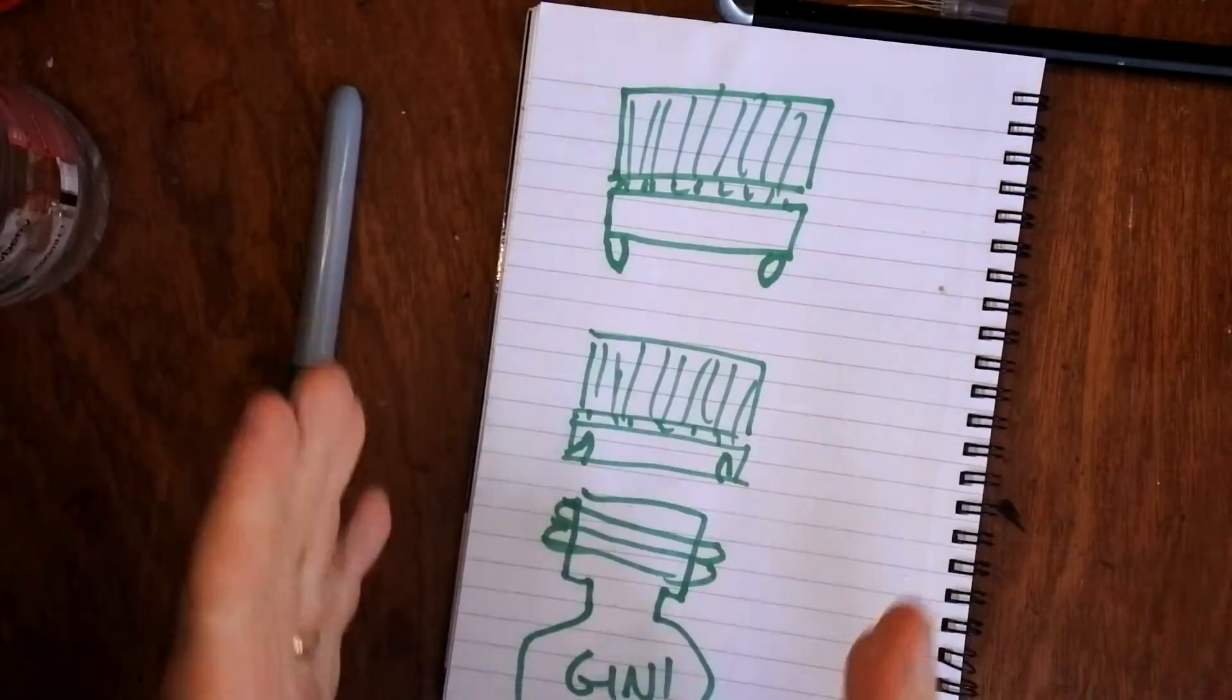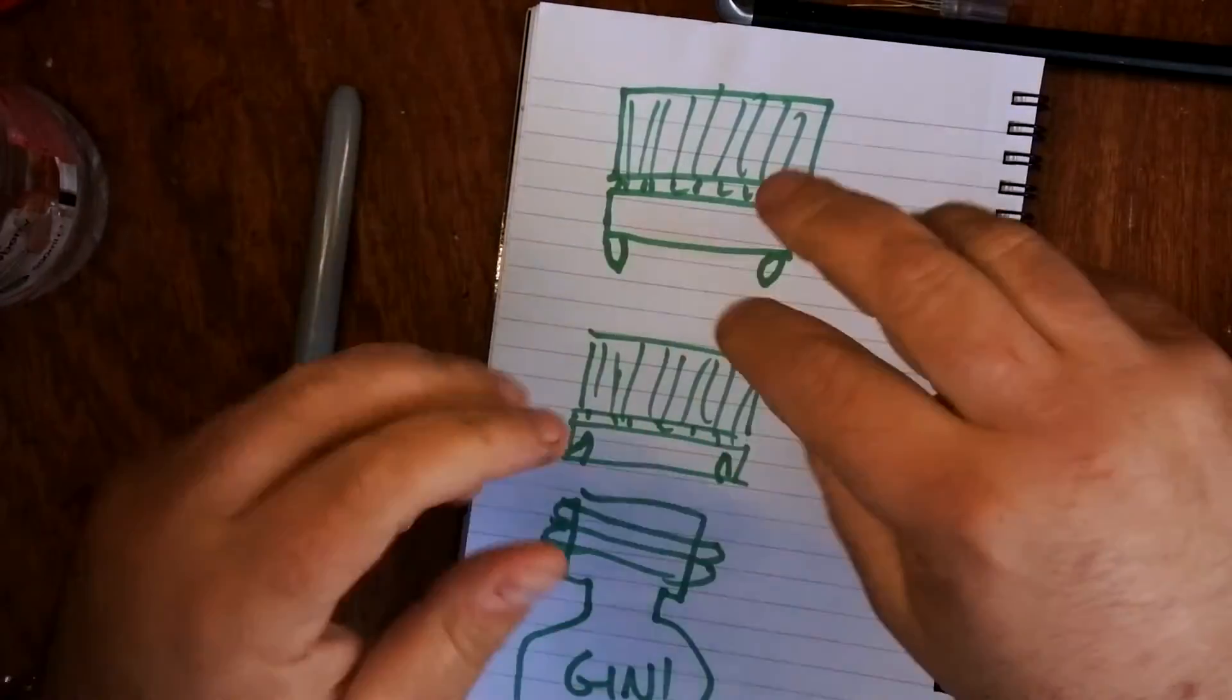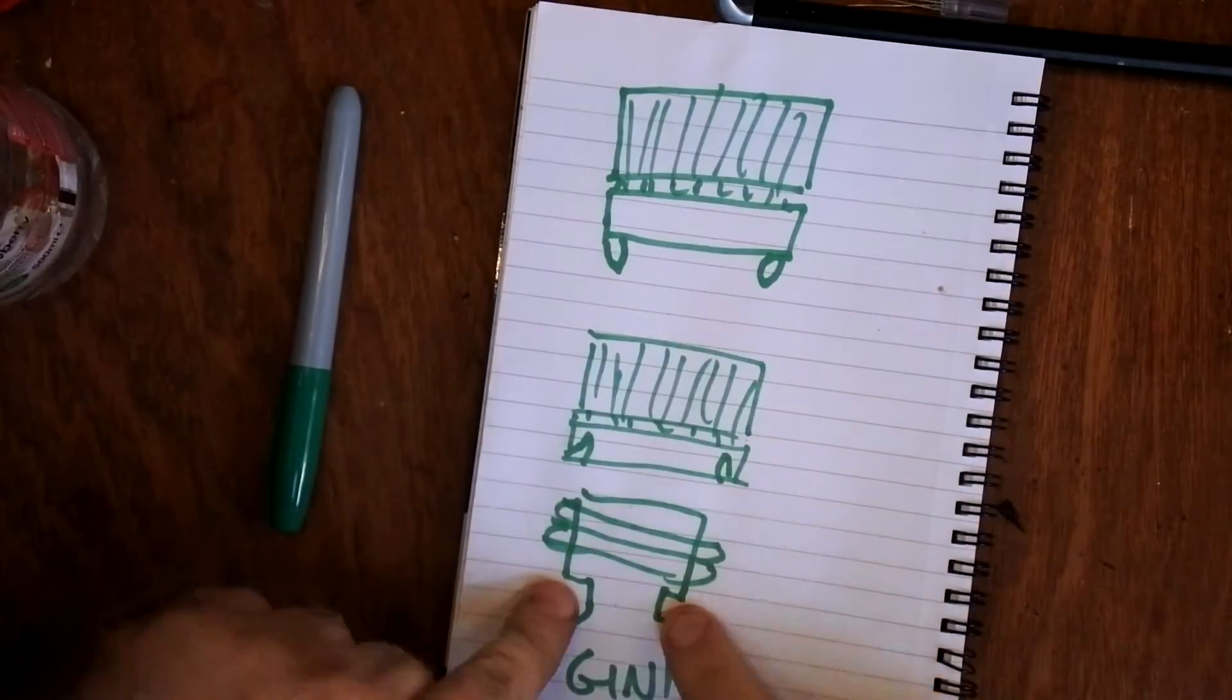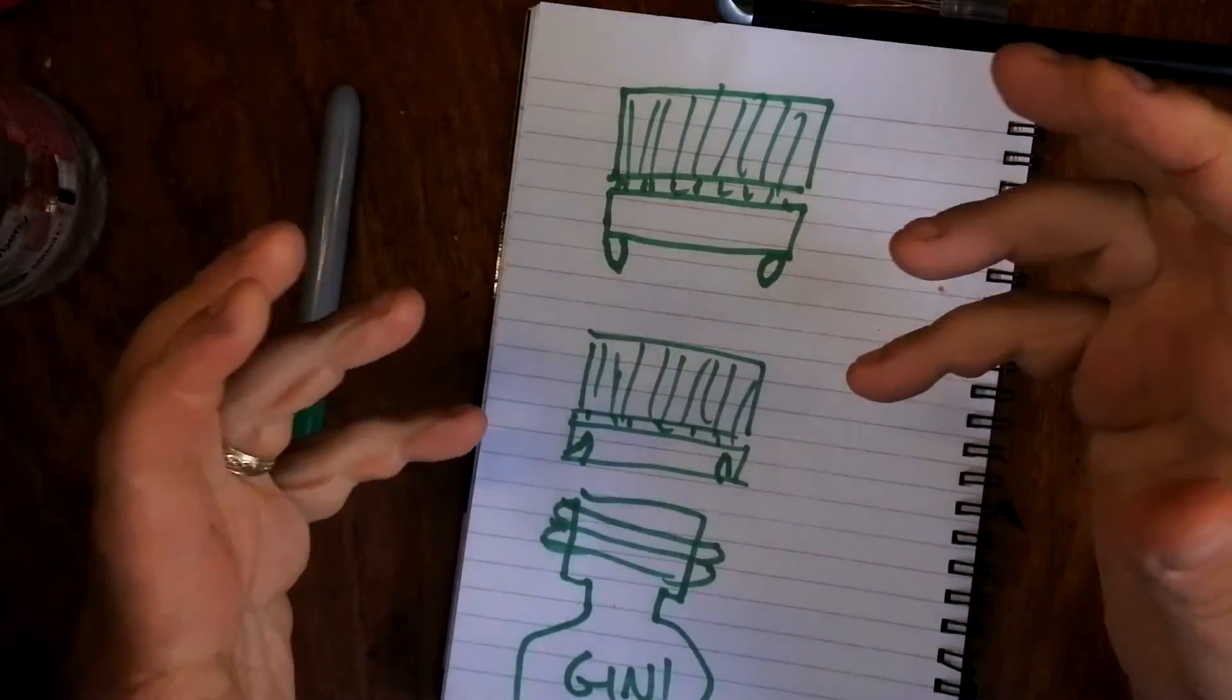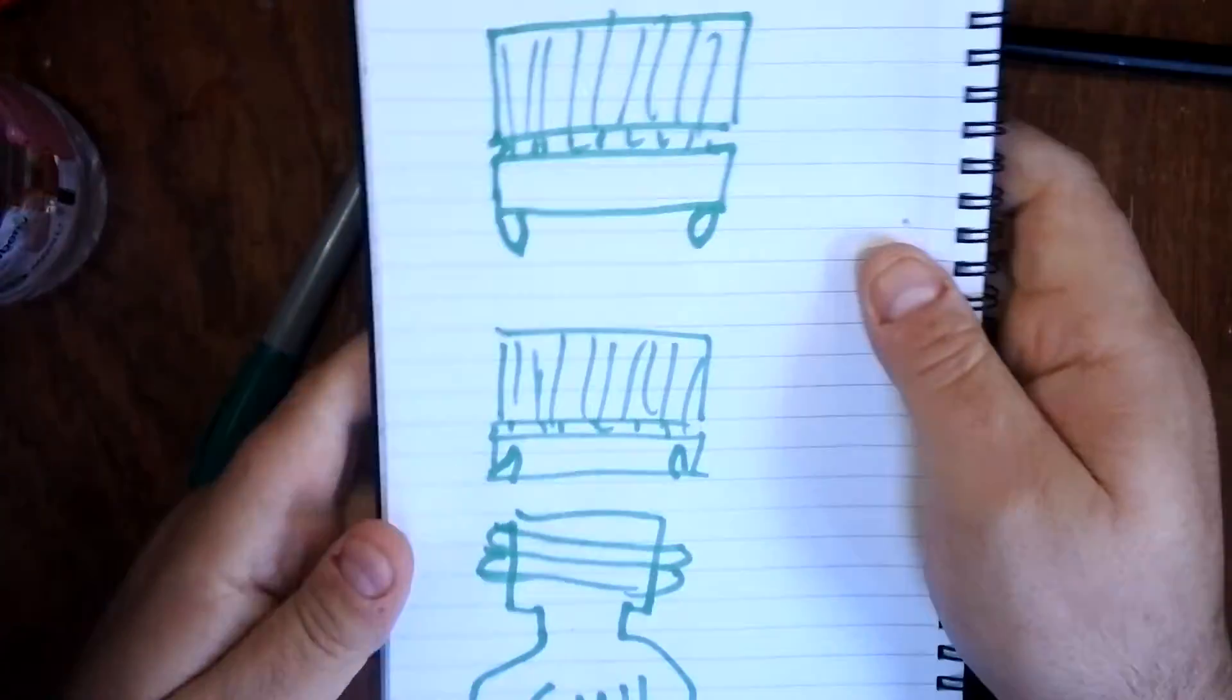So when you unscrew it you pull it upwards and these teeth clasp onto this little ridge here and break the seal. It's quite a simple concept really, but it is designed with manufacturing efficiency in mind.